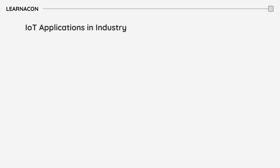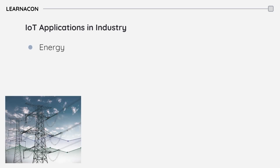IoT applications in industry are growing every day. In smart grids, sensors monitor energy parameters and transmit data to the cloud for analysis. This enables real-time energy management, fault detection, and automated load balancing to optimize grid performance.